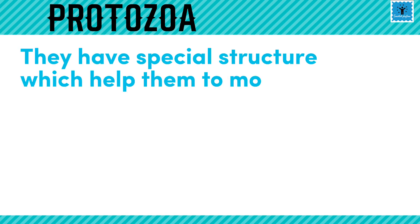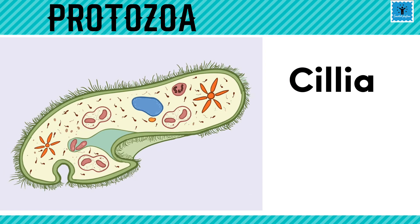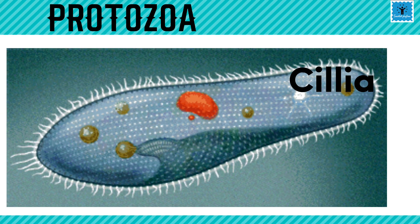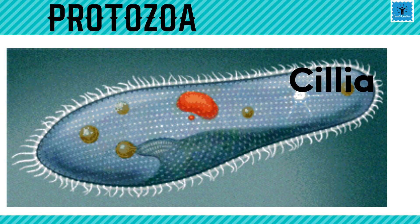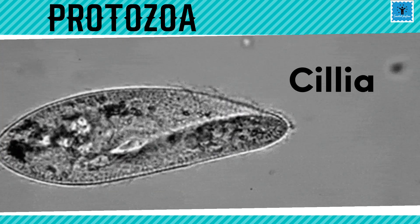Protozoa have cilia or flagella which help them move. Cilia are tiny hair-like structures that cover the outside of the microbe. They beat in a regular, continuous pattern which helps the organism move — for example, in the case of Paramecium.